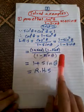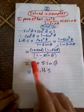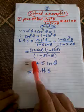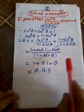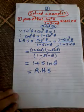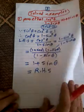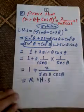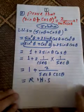So we have one plus sine theta times one minus sine theta over one minus sine theta. Cancel the common factor of one minus sine theta, and you get one plus sine theta, which is the right hand side. So both sides are equal.